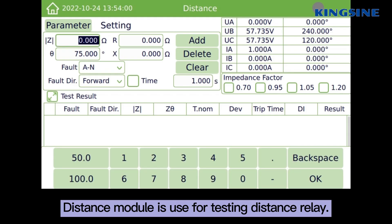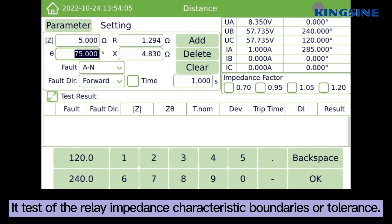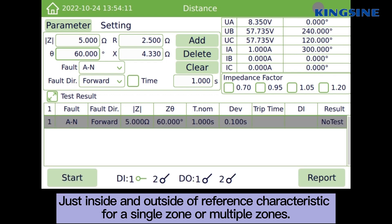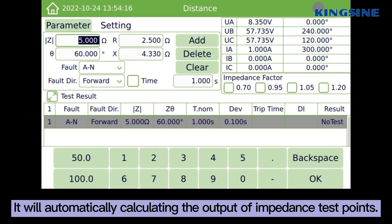Distance module is used for testing distance relay. It tests of the relay impedance characteristic boundaries or torrents, just inside and outside of reference characteristic. For a single zone or multiple zones, it will automatically calculating the output of impedance test points.